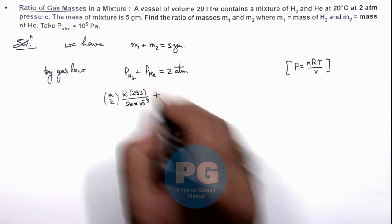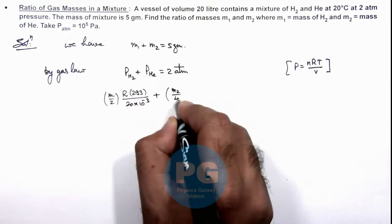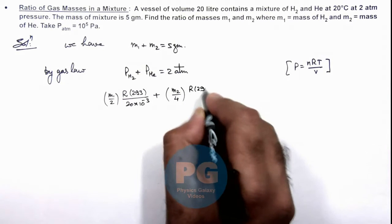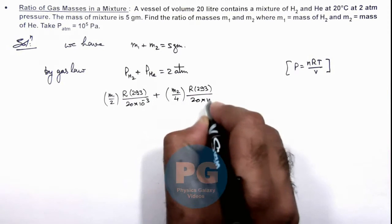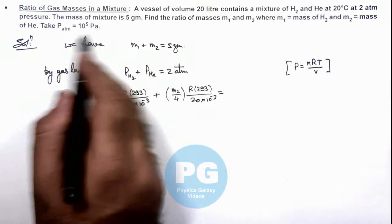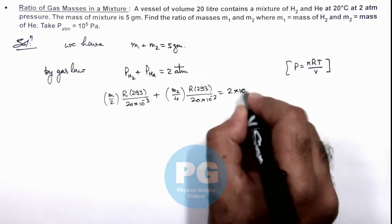Plus we can write for helium number of moles are m2 by 4, multiplied by r, multiplied by 293, divided by 20 into 10 to power minus 3 is equal to 1 atmosphere. We are given as 10 to power 5 pascal so this is 2 into 10 to power 5.